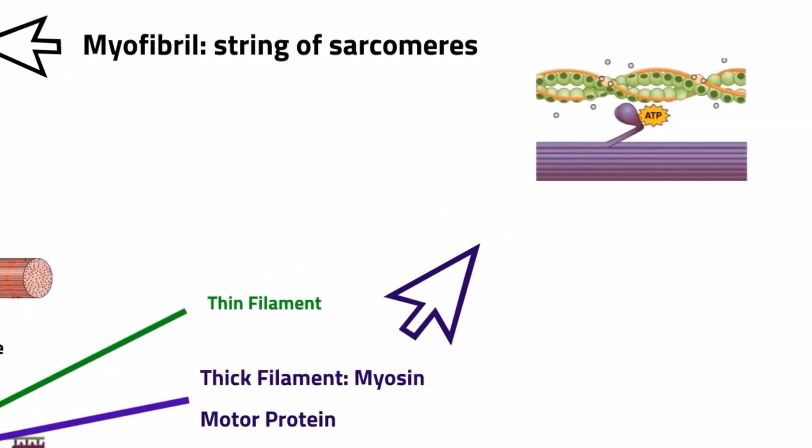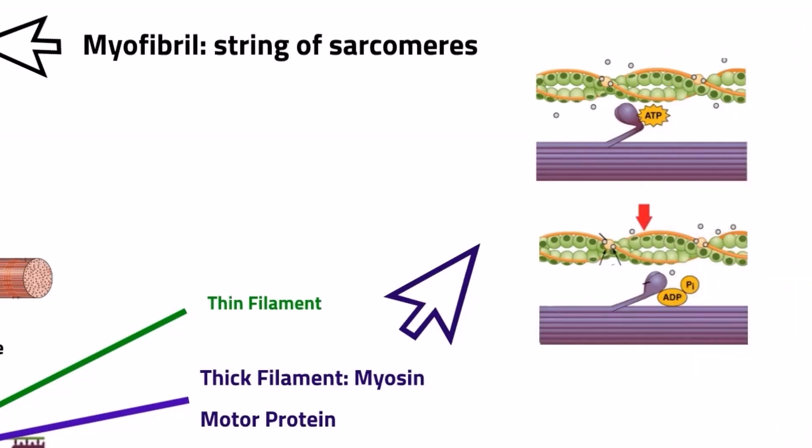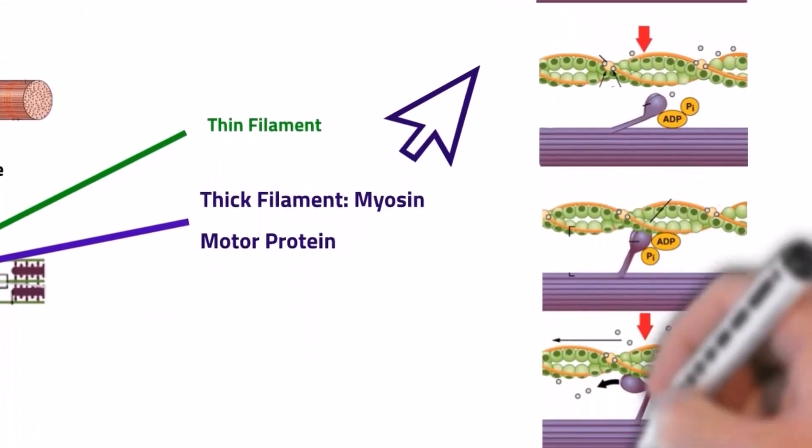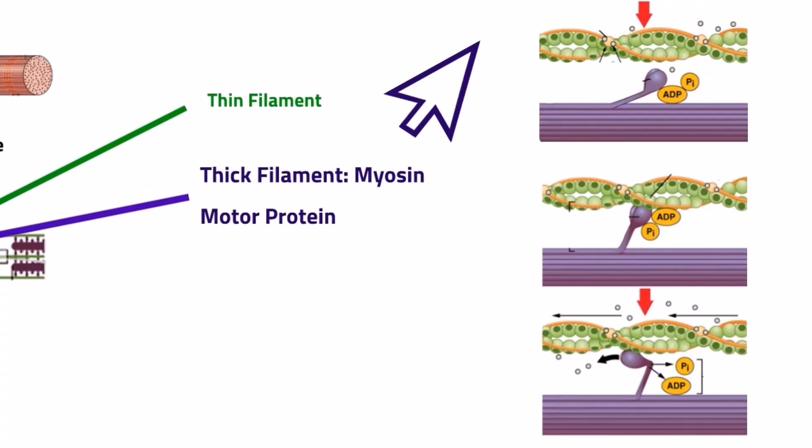Myosin can bind ATP, take the energy from one of the bonds, and cock itself into a high energy state. It's a lot like a slingshot cocked and ready to fire. The myosin then binds a thin filament and snaps it towards the center of the sarcomere, releasing the stored energy. This cycle repeats itself over and over as long as the muscle is contracting.